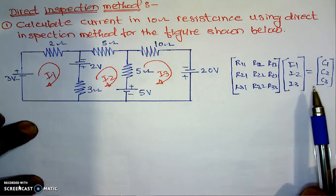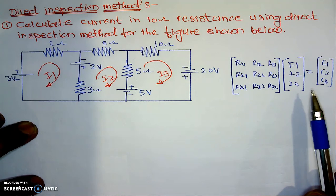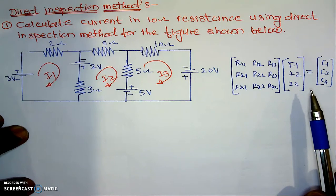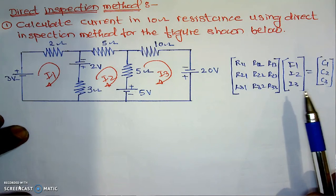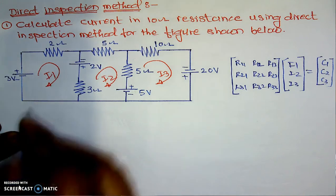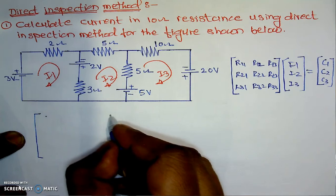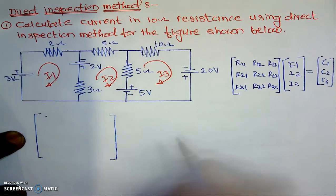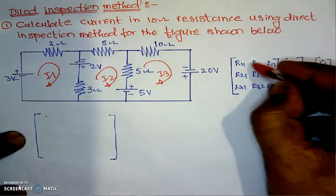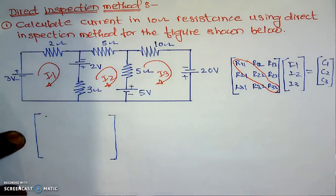By using this matrix, we can prepare it directly by looking at the figure — that is why this method is known as the direct inspection method. We are inspecting the circuit and preparing this matrix directly. In this method, all the diagonal elements — R11, R22, R33 — are positive. Now we will start with the calculation.